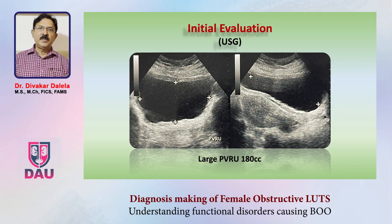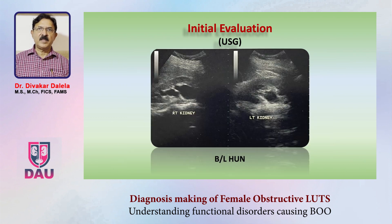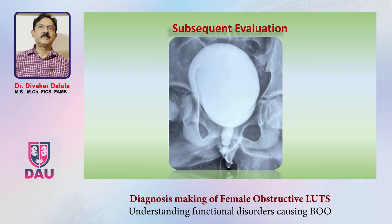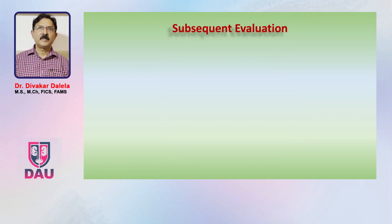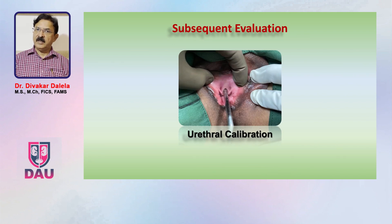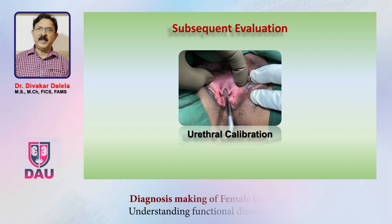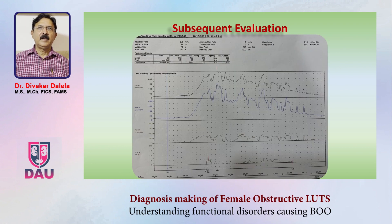On ultrasound you will usually see a large post-void residual urinary volume, and because this disease is long-standing in some patients they often develop bilateral hydroureteronephrosis. On the voiding cystourethrogram the bladder neck opens nicely and the urethra fills up nicely, but there is a sudden cut-off at the level of the sphincter which is trying to obstruct urinary flow. The calibration test is normal because the external sphincter is compliant — it is hypercontractile but compliant.